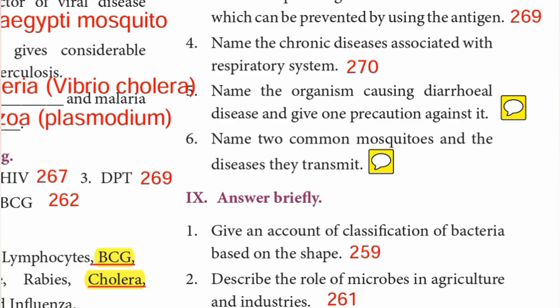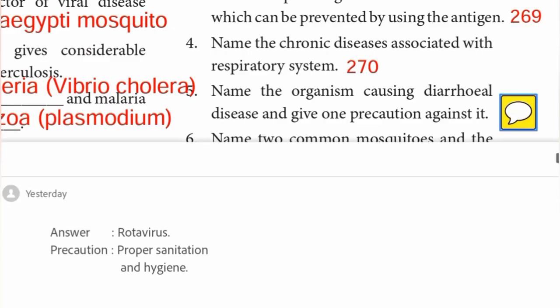Fifth one — name the organism causing diarrheal disease and give one precaution. The organism is Rotavirus. Precaution: proper sanitation and hygiene.